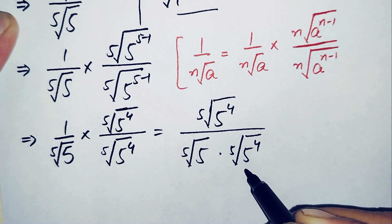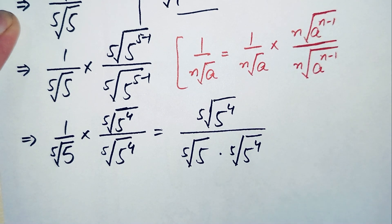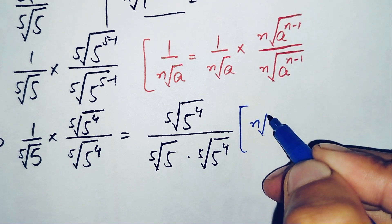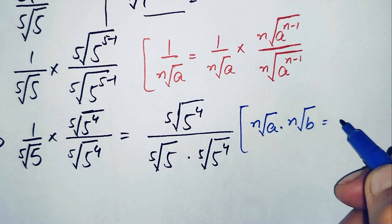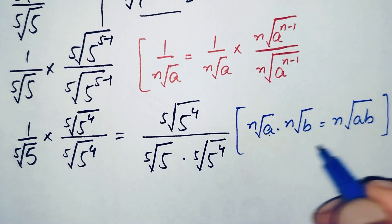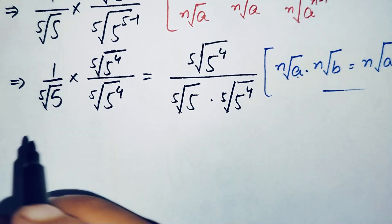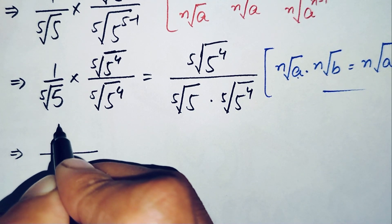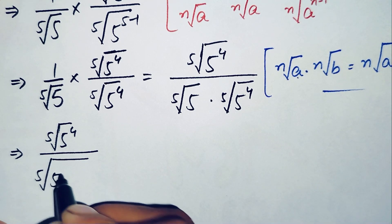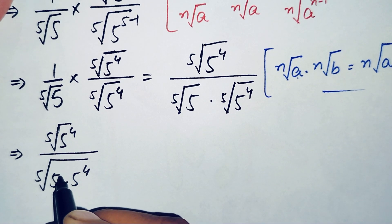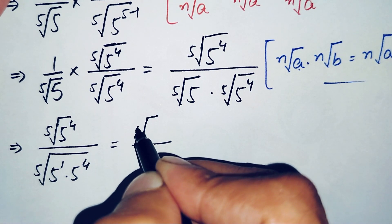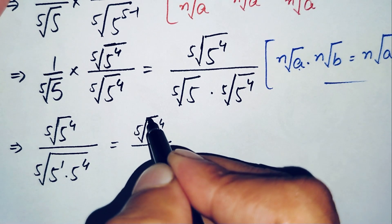Inside the denominator, the base inside both roots is the same (5 and 5), so we use the property that nth root of a times nth root of b equals nth root of a times b. The numerator stays as the fifth root of 5 raised to power 4. In the denominator, the base is 5 with power 1, so adding powers: 1 plus 4 gives 5, making the denominator the fifth root of 5 raised to power 5.